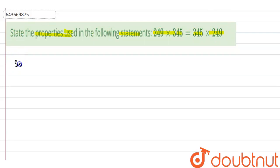So now we will come to the question and try to understand. We have to state the properties which is used in 249 into 345 equal to 345 into 249.